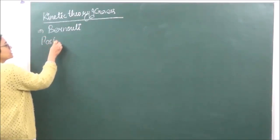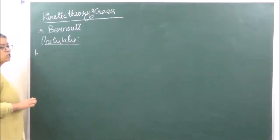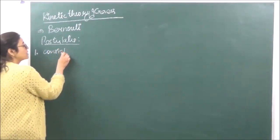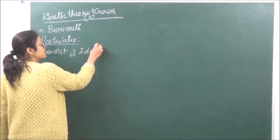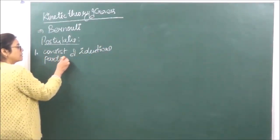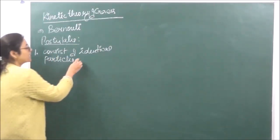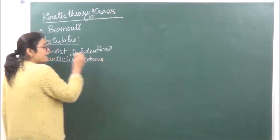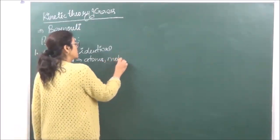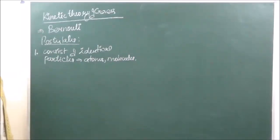What were the postulates of this? The first postulate was that all gases consist of identical particles, and these identical particles may be atoms as in the case of inert gases, or they may be molecules as in the case of the rest of the gases.